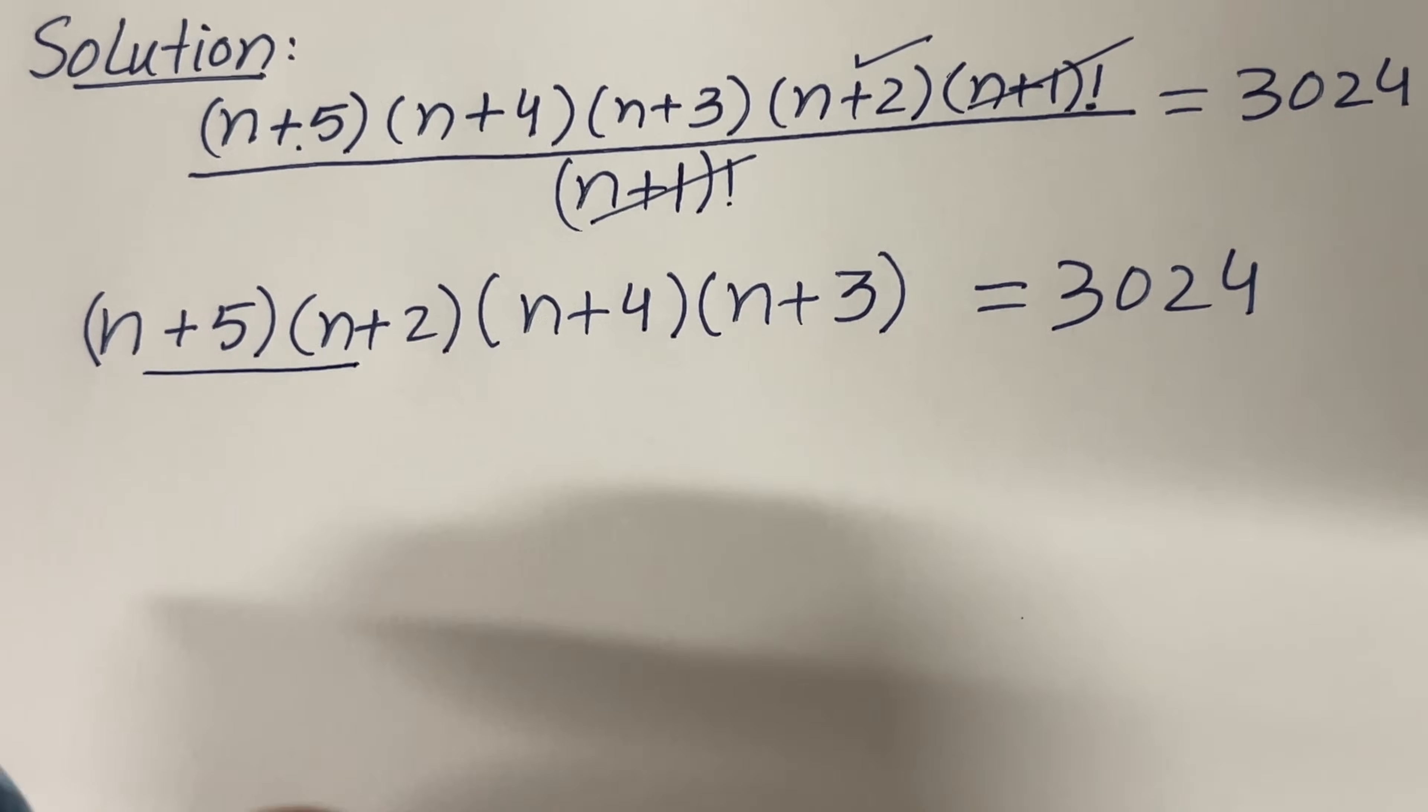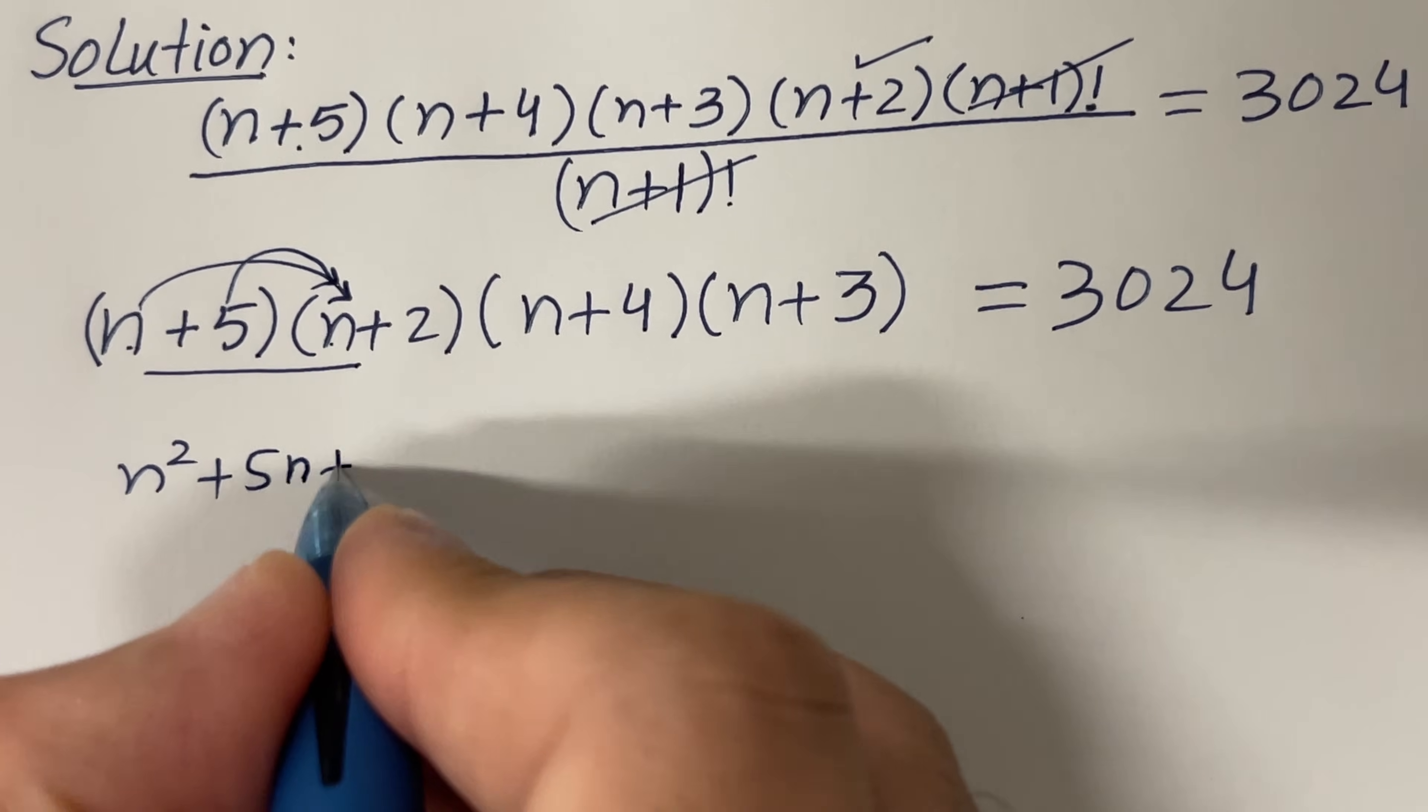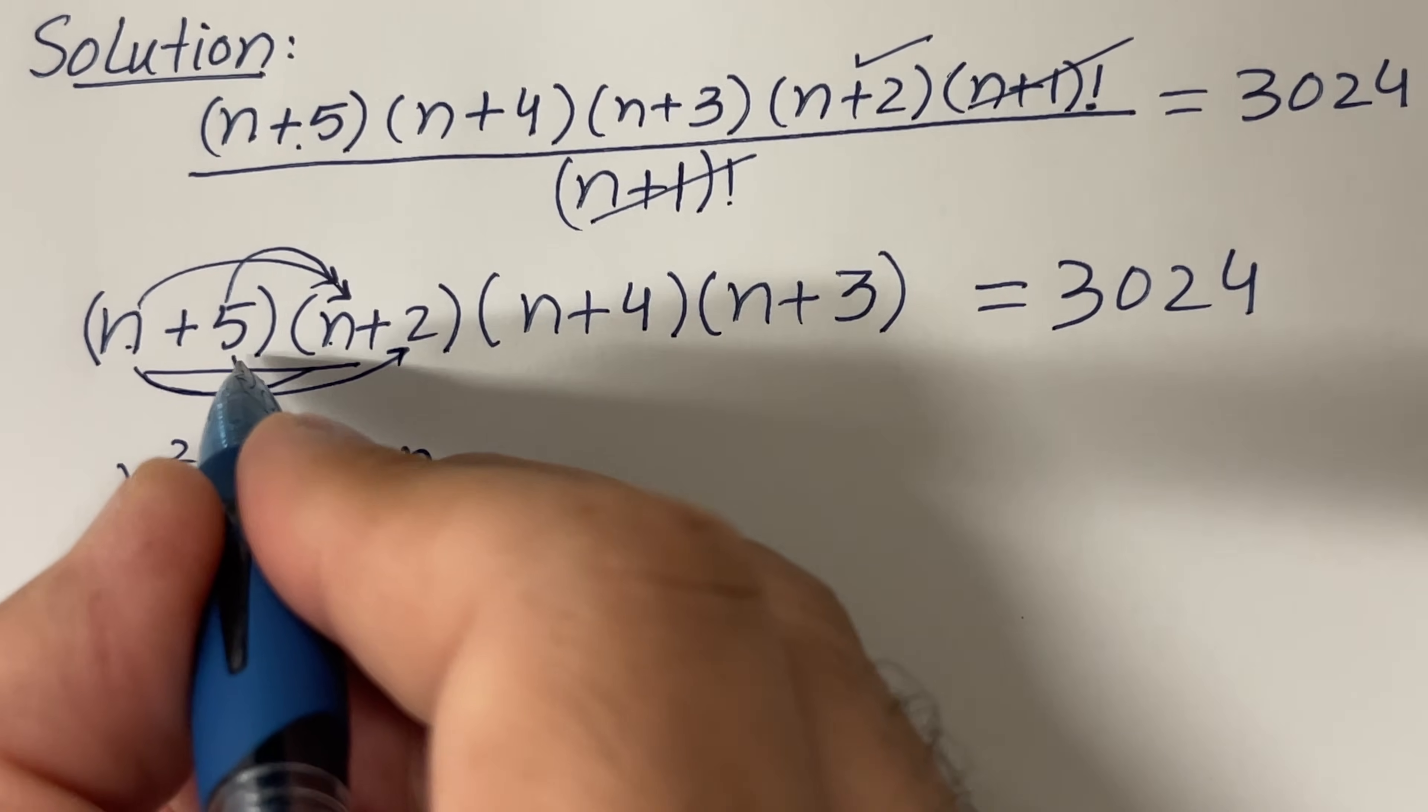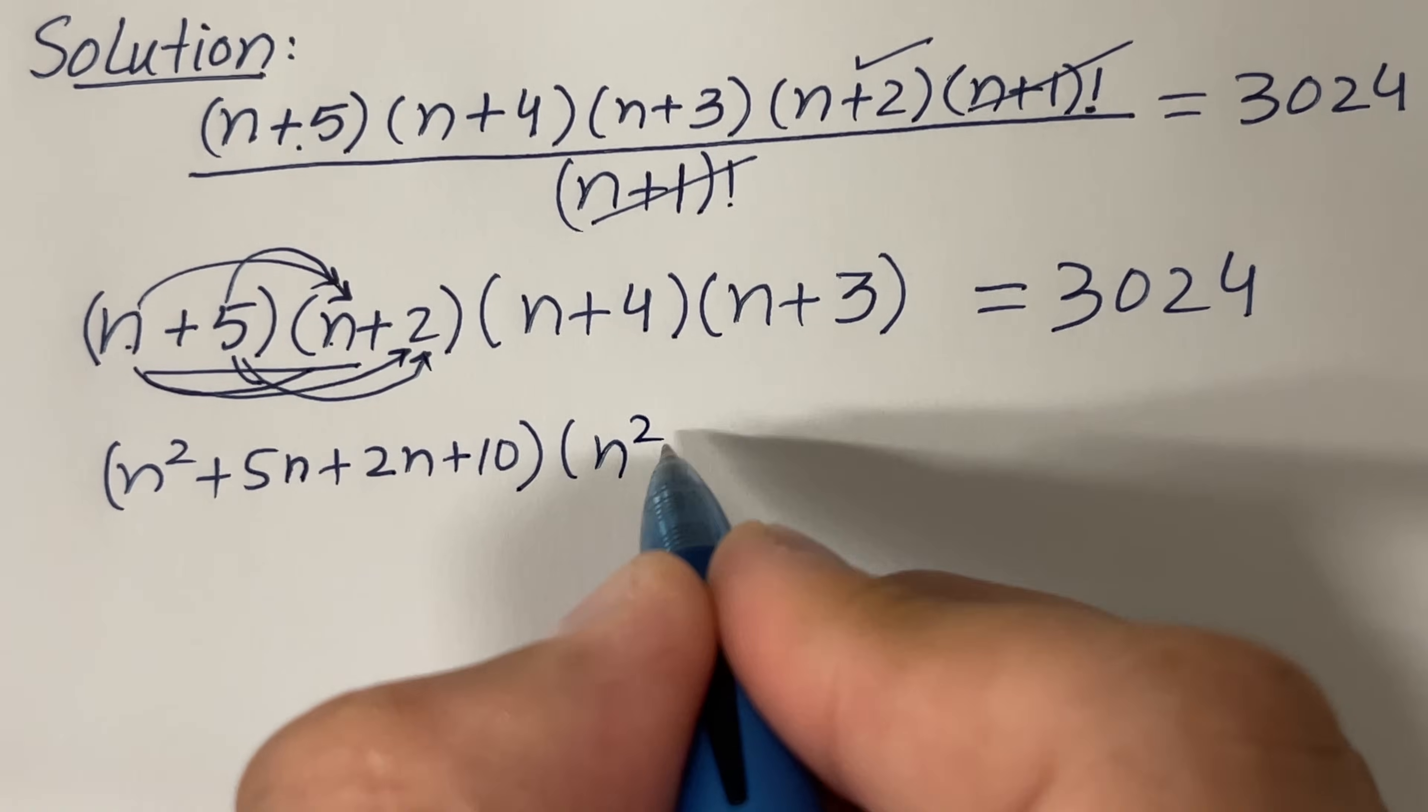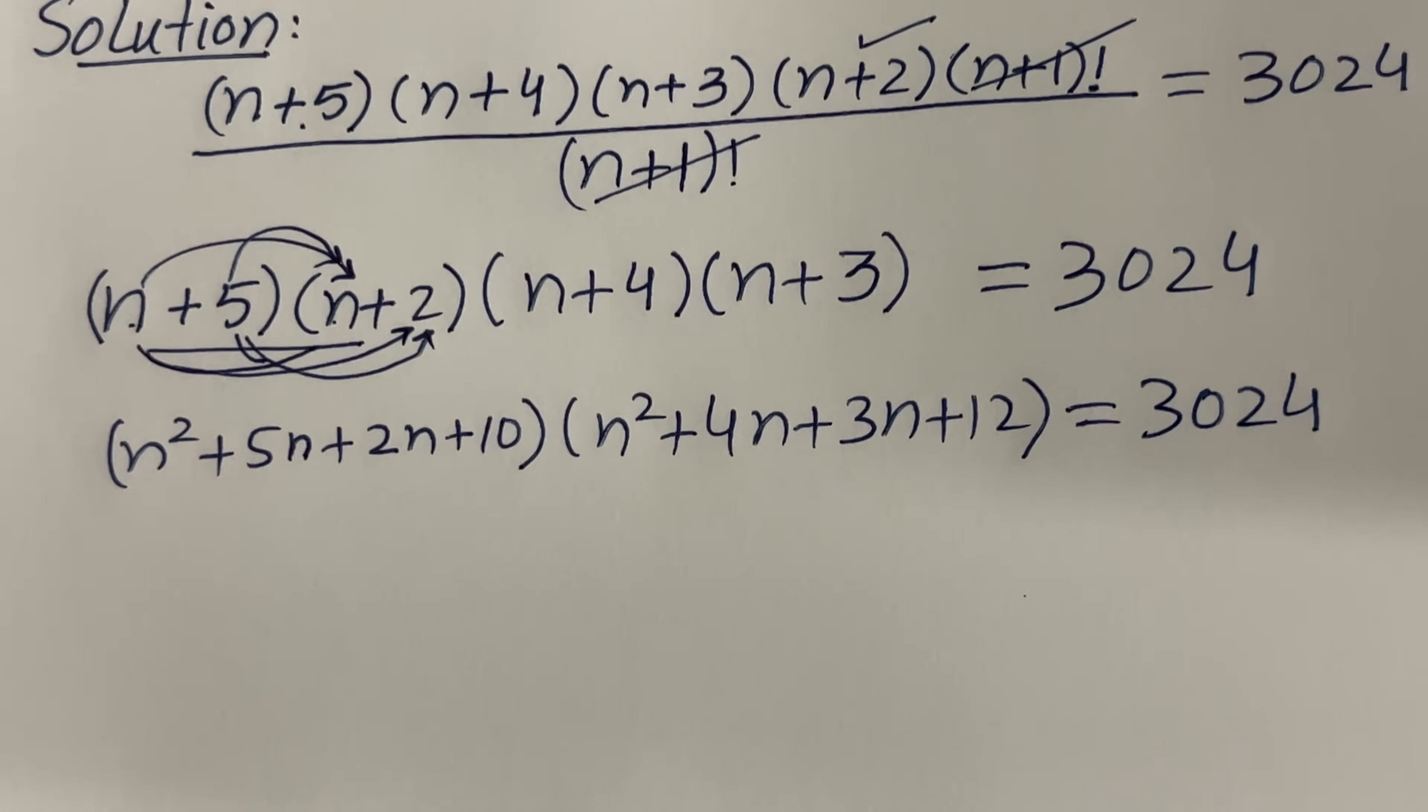Let's multiply these two factors. n times n is n², plus 5 times n is 5n, plus n times 2 is 2n, plus 5 times 2 is 10. Similarly, let's multiply here: n times n is n², plus 4n, plus 3n, plus 12 equals 3024.